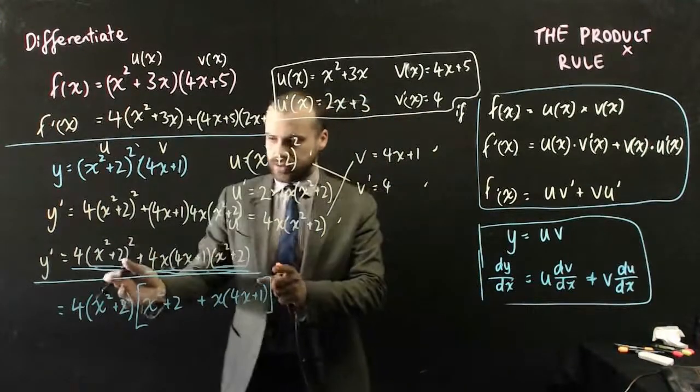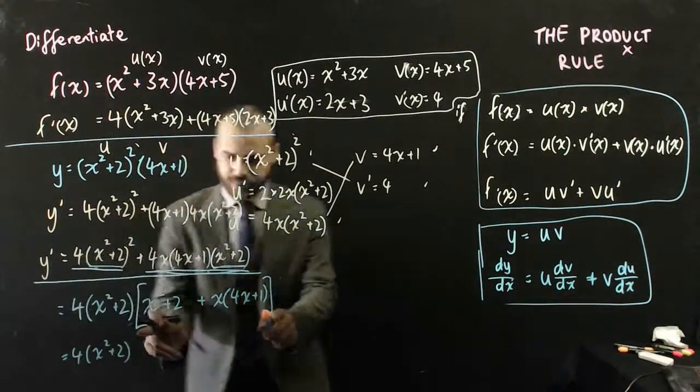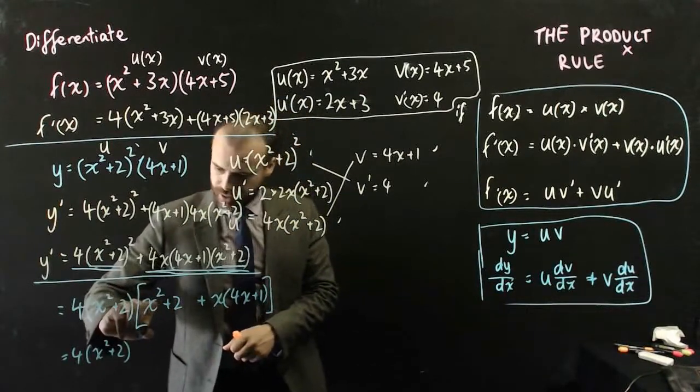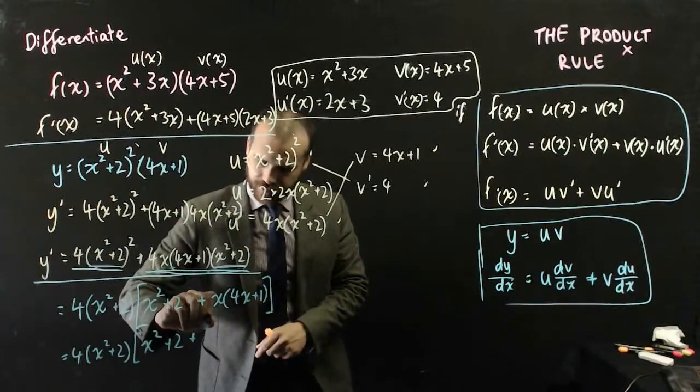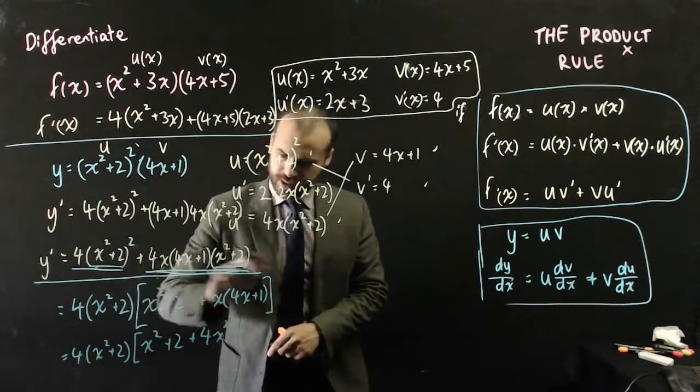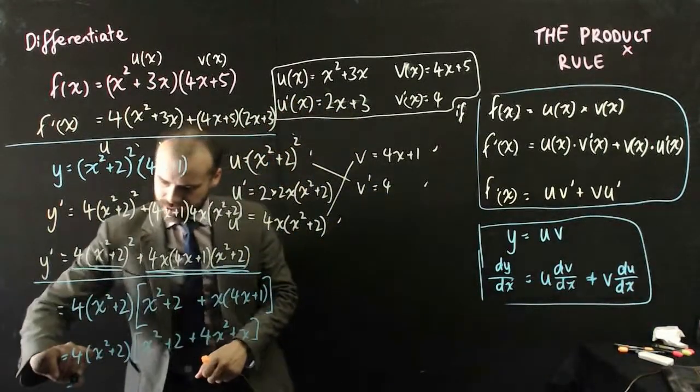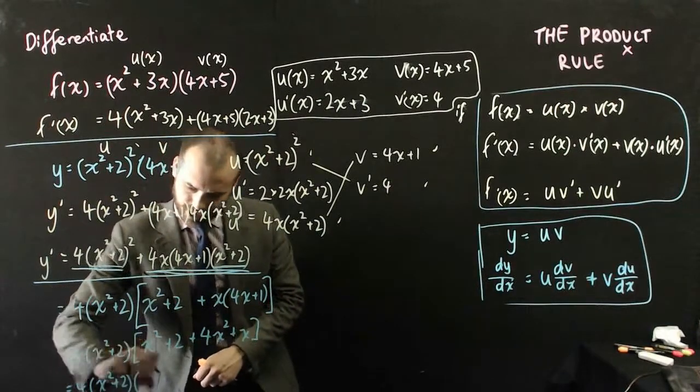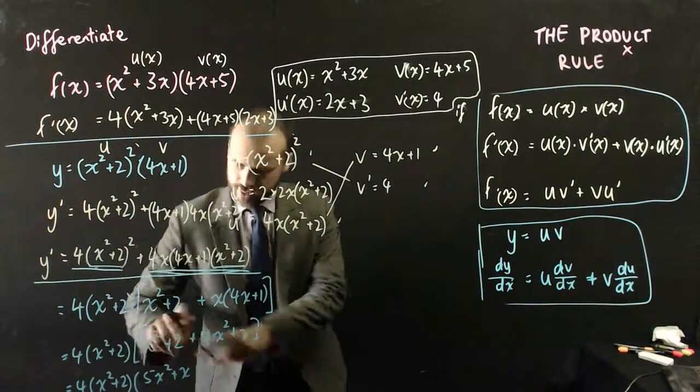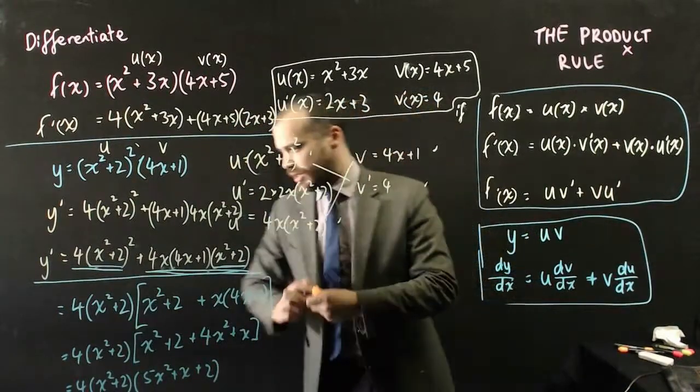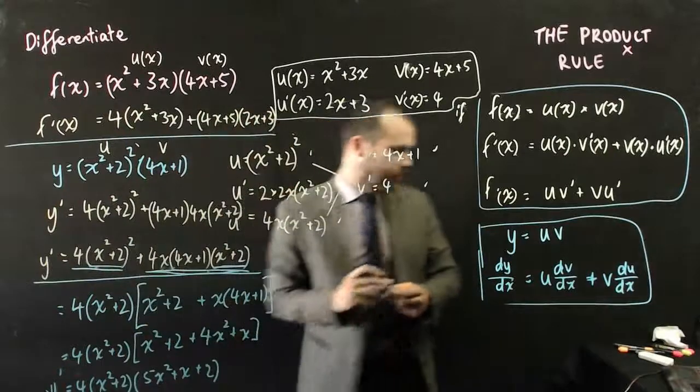So that's sort of factorized. It doesn't look much neater, but if I take some time now to look inside this square bracket, I can... Keep the square bracket for a second. x² + 2 plus... Expand that... 4x² + x. And then I can neaten that up just a little bit further. 4(x² + 2) bracket. x² + 4x² is 5x², x, 2. And now I have something. I have a number times this function times a quadratic function, and that is my nice, neat y'.